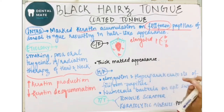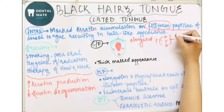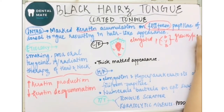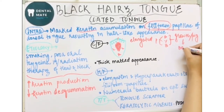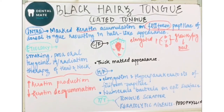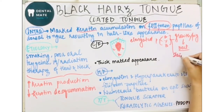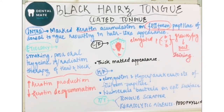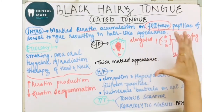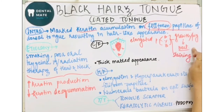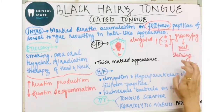This color is because of the growth of pigments. The pigments come from pigment-producing bacteria, staining from tobacco, coffee, or other food products. So the elongated papillae seeds which are usually black, yellow, or brown in color — this color is because of the growth of pigment-producing bacteria or staining from food products.